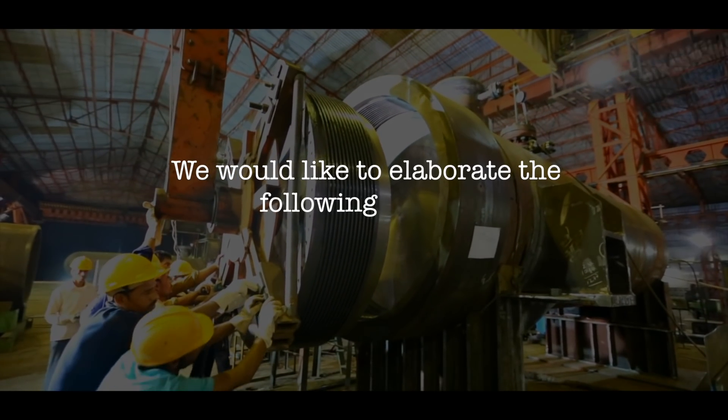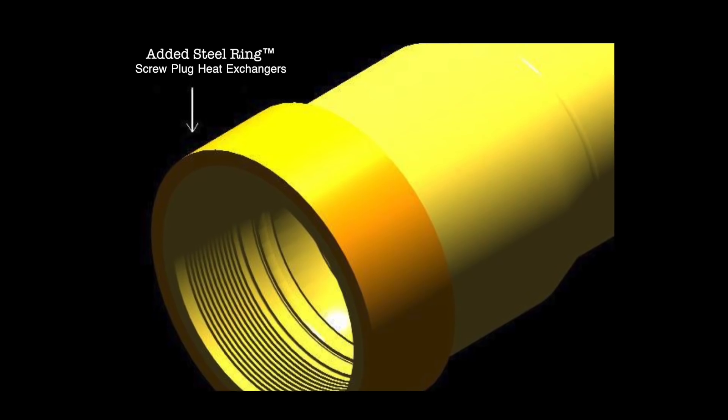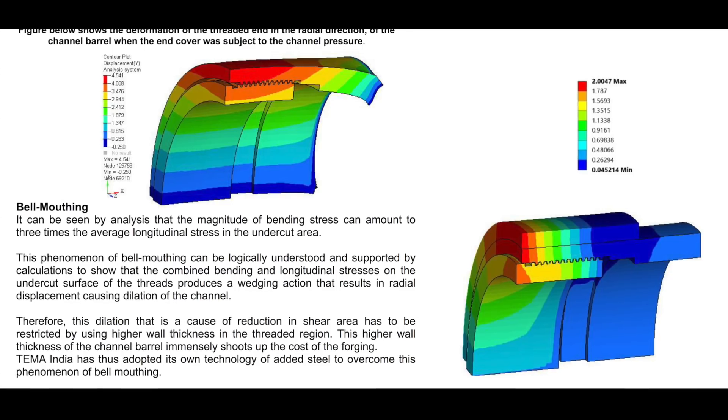We would like to elaborate the following points. Point 1: Added steel is needed to limit the deflection on the threaded area due to the radial load caused by the screwed end cover.